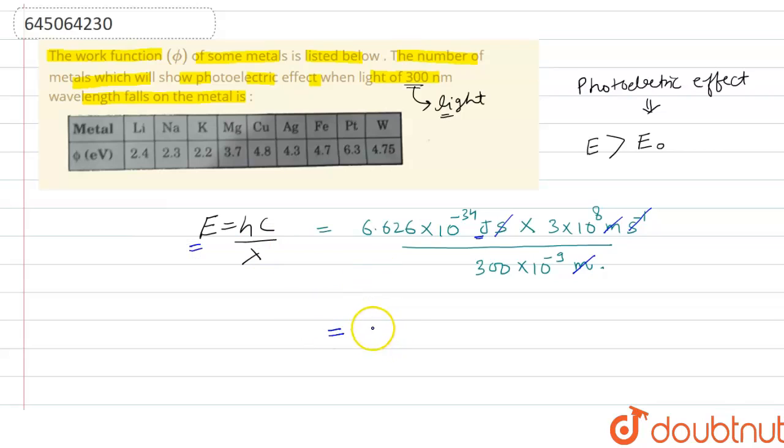So here we will get 19.878 × 10^-26, and the unit is joule. And in the denominator we have 3 × 10^-7.